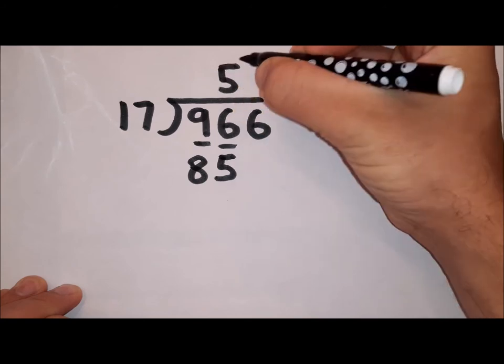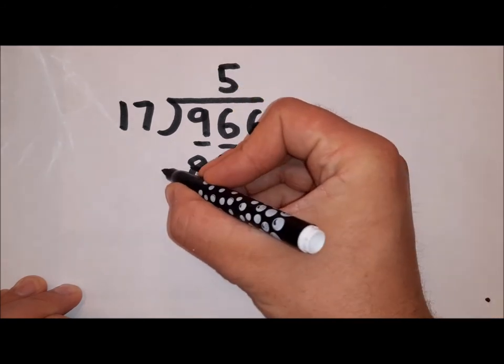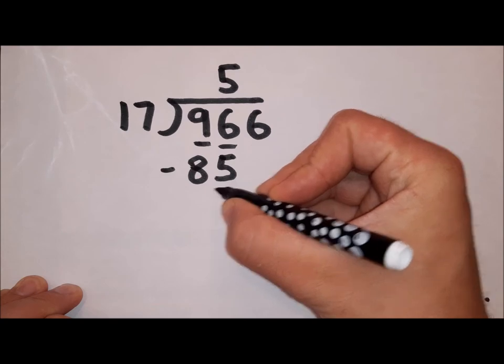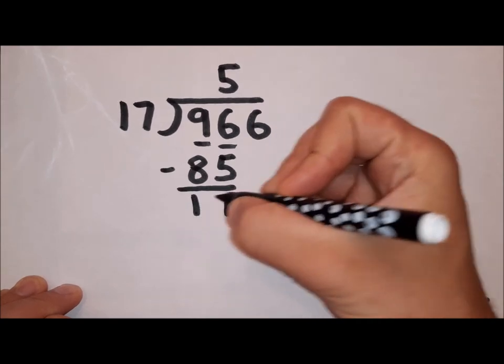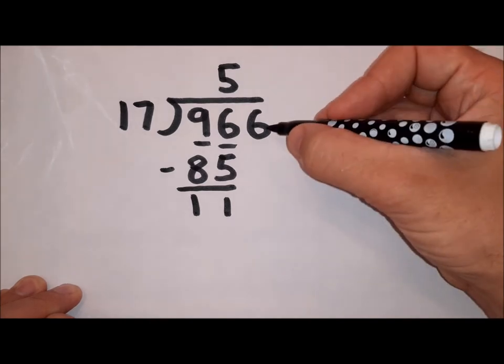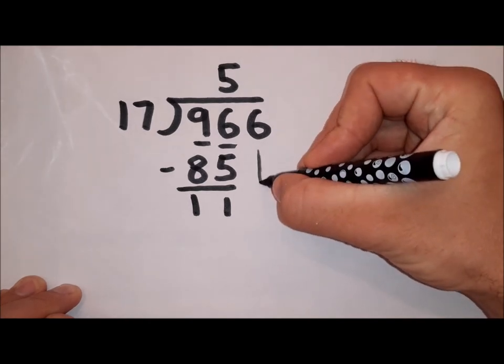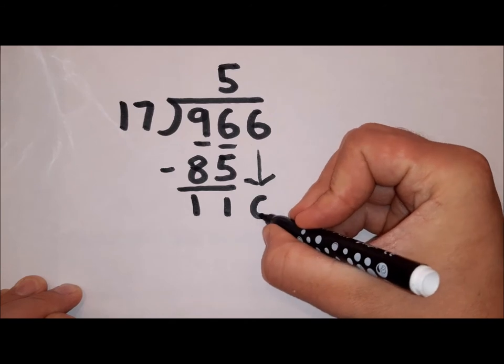So I put my 5 at the top and then I know I've got to take away 85 from 96. That's going to give me 11. I bring that 6 down and now I've got 116.